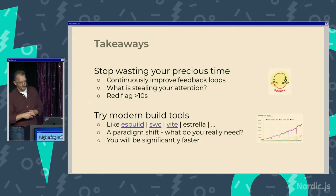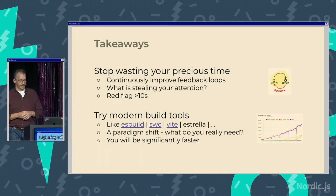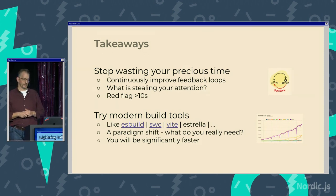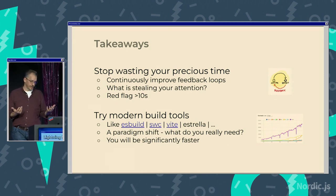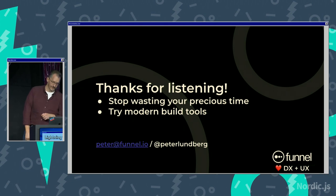Some takeaways: stop wasting your precious time. Think about how to continuously improve your feedback loops. Think about what is stealing your attention, because things over 10 seconds will break you down more than you think. It might not be build tools, but it's valuable thinking about this. And if you haven't already, try out these modern build tools — it's a paradigm shift. Think about what you really need in your tool chain. You will be significantly faster and might not want to go back. Thanks for listening.